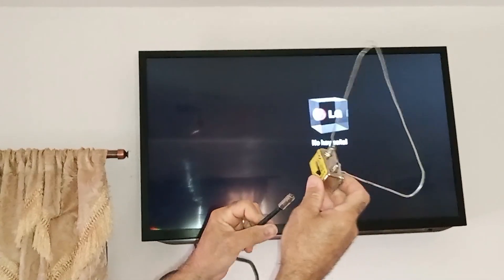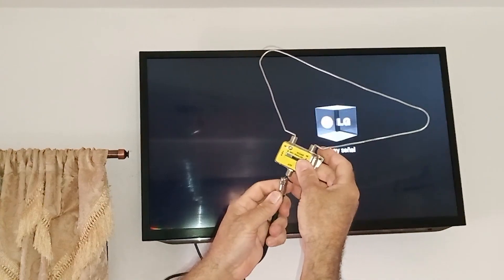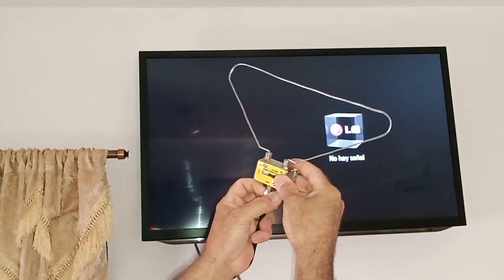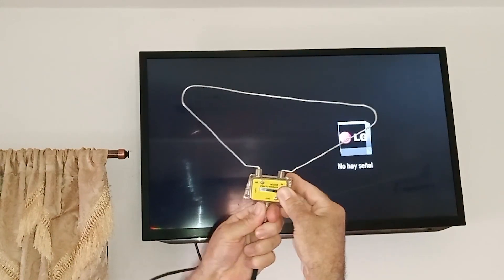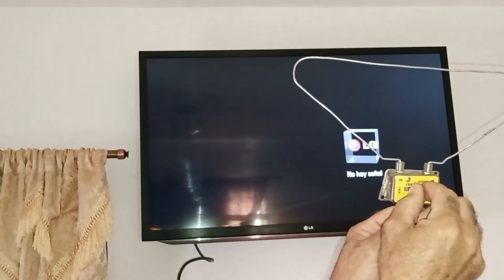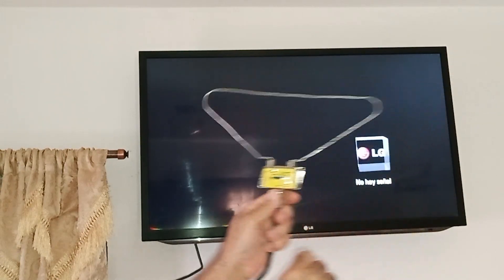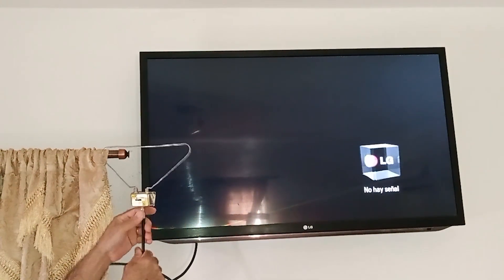Antenna placement and adjustment. Initial positioning: Place the homemade antenna in an elevated location near a window with a view of the TV transmission tower. Fine tuning: Experiment with different positions and orientations of the antenna to find the spot that gives you the best image quality. Use a TV to check the signal and make any necessary adjustments.